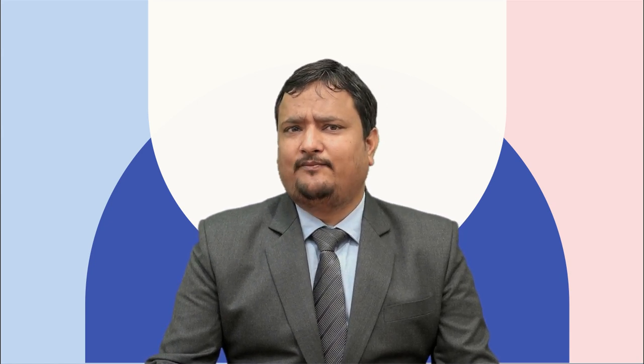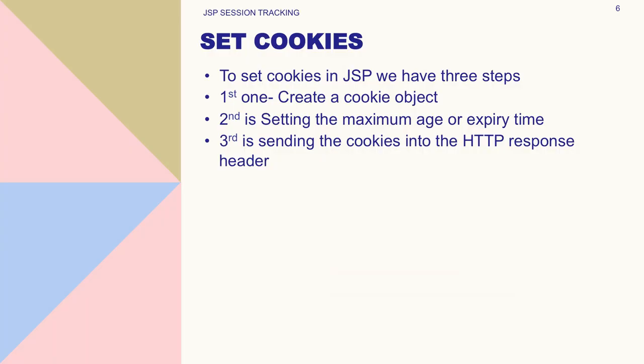Now we will implement cookies in JSP — this is a practical session. I will show how we can create cookies, how we read cookies, and how we delete cookies. To set cookies in JSP, there are three steps: first, create a cookie object; second, set the maximum age or expiry time of the cookie — after this time it will expire automatically; third, send the cookie in the HTTP response header.